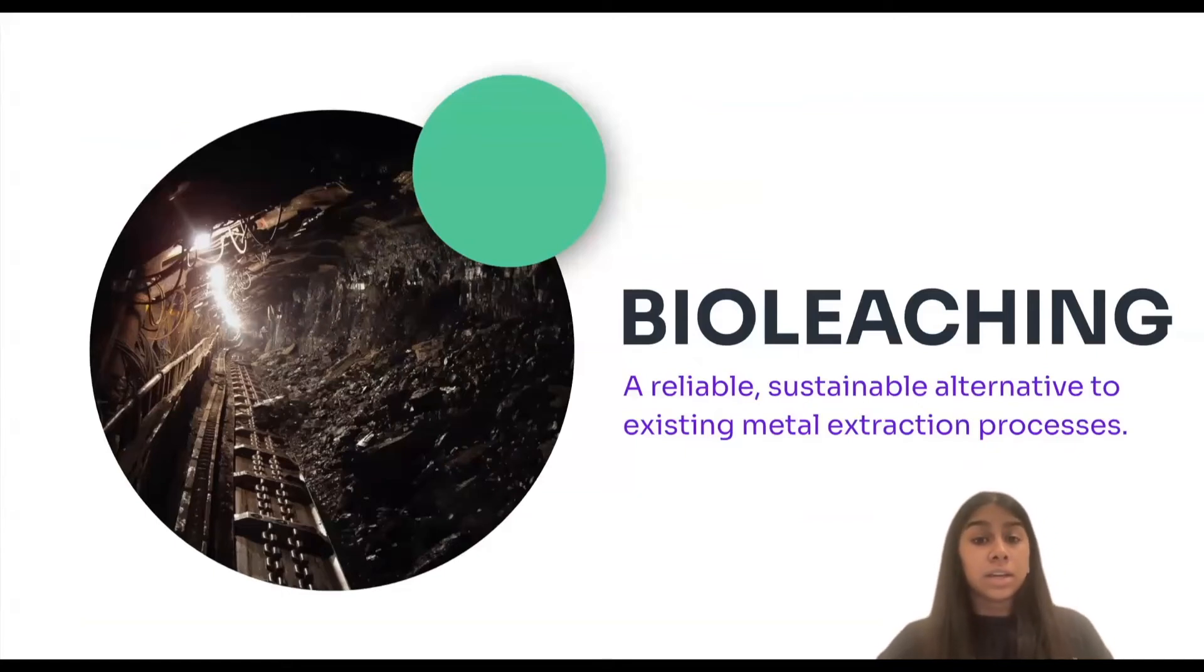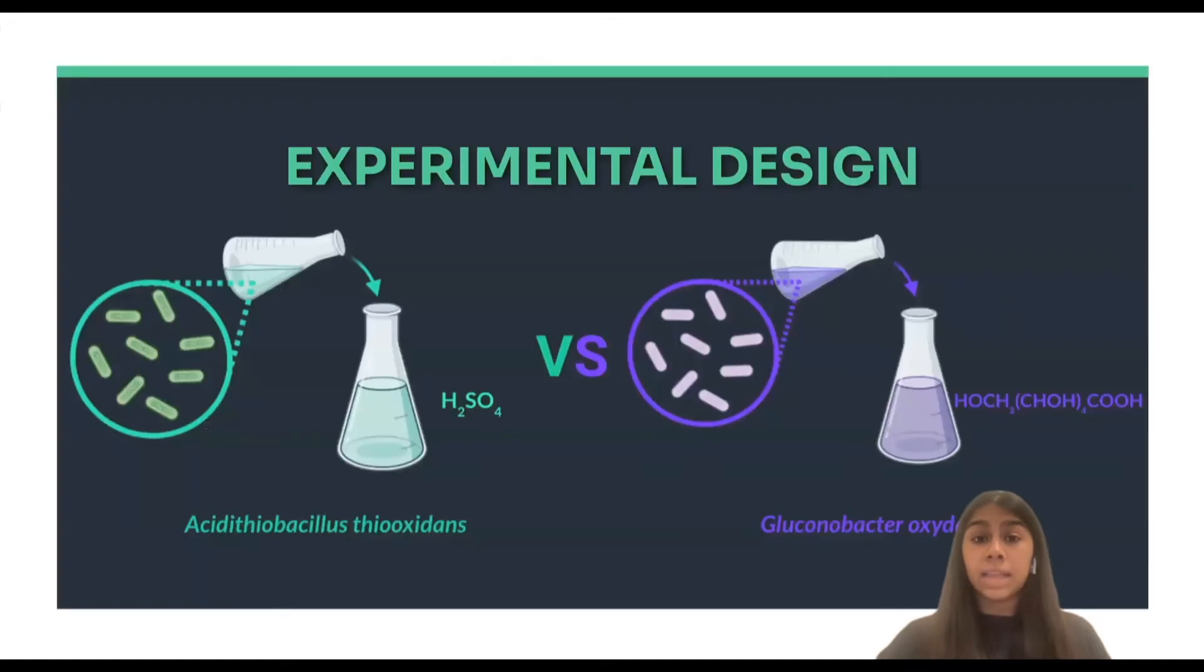Bioleaching allows us to harness the metabolic byproducts produced by microbes in order to extract metals. This method eliminates the need for traditional toxic processes and drastically reduces environmental damage. In particular, A. thiooxidans and G. oxydans are two microbes identified for their notable bioleaching capabilities. A. thiooxidans produces sulfuric acid and G. oxydans produces gluconic acid.